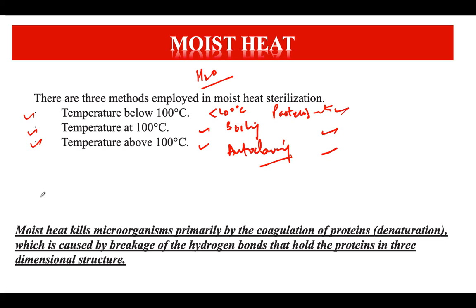The principle by which moist heat kills microorganisms is the coagulation of proteins — specifically what we call denaturation. When microorganisms on the object being sterilized are exposed to high temperature, the proteins present in them start to denature, their metabolic processes stop, and ultimately the microorganisms die. This denaturation occurs due to breakage of hydrogen bonds holding proteins in their three-dimensional active conformation.